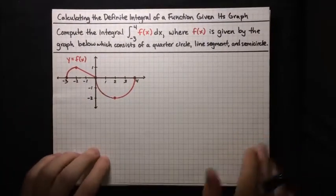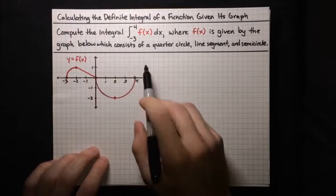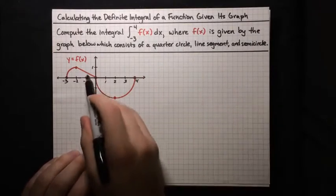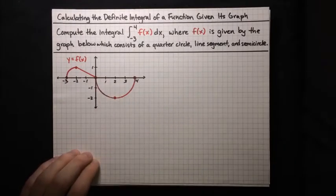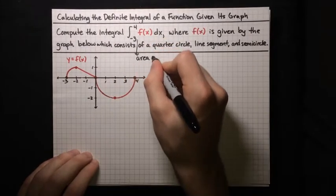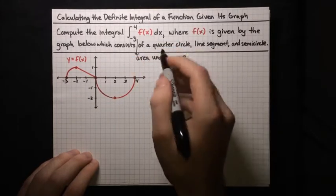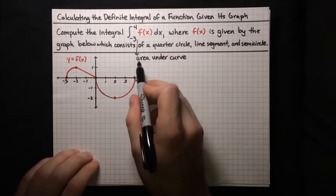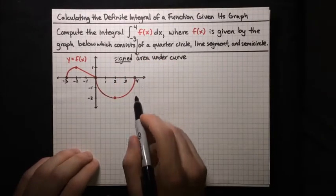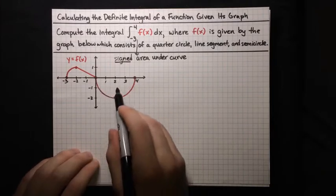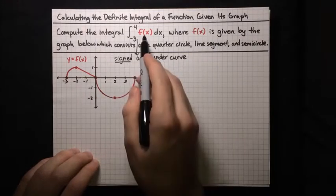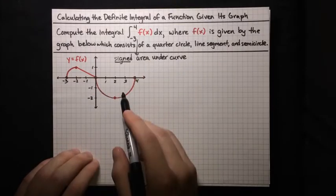Here's another example. Again, we want to compute the integral of f(x) from negative 3 to 4, where f(x) is given by this graph below, which consists of a quarter circle up here, a line segment here, and a semicircle over here. Again, we're going to be thinking geometrically. This integral is the signed area under the curve, which means we count all area below the x-axis as negative area and subtract it from the area above the x-axis.